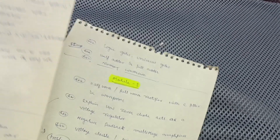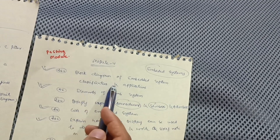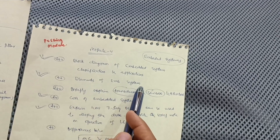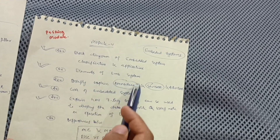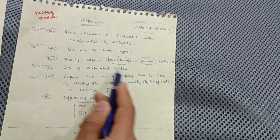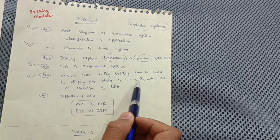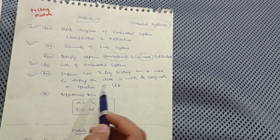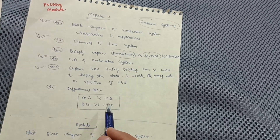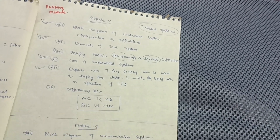The next passing module is Module 4 — Embedded Systems. Focus on the block diagram, classification, and applications of embedded systems; these are the most important questions. Elements of embedded system is the most important topic. Go through transducers, sensors, and actuators, and the core of the embedded system. Also cover: how a seven-segment display is used to display data, operation of LED (Light Emitting Diode), differences between microcontroller and microprocessor, and RISC versus CISC.